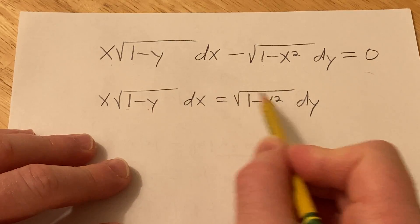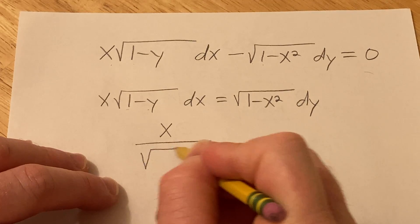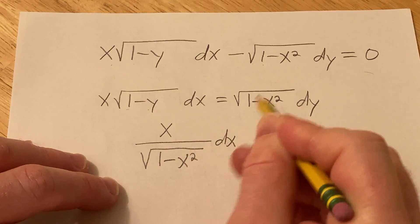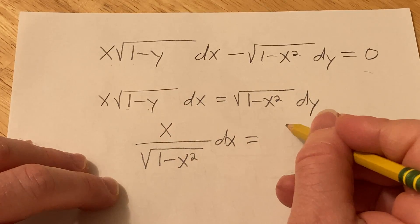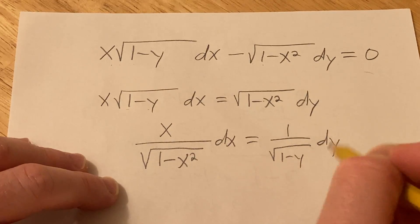Likewise, divide by this so it's over here. So we'll end up with x over the square root of 1 minus x squared dx, right? Dividing by this and then divide by this. So over here you get 1 over the square root of 1 minus y dy.